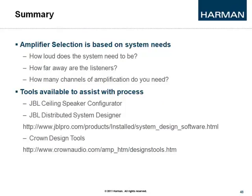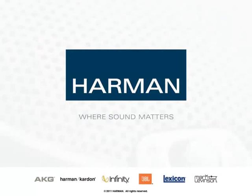To summarize what you need to design your system: determine how loud it needs to be, how far away the listeners are — measured at ear height, typically 4 feet, so a 10-foot ceiling means 6 feet to the listener — and how many zones and channels of amplification are required. Then use the available tools: the JBL Ceiling Speaker Configurator and Distributed System Designer, both free and downloadable. Crown design tools are also available online to calculate loss due to distance. High impedance systems are nothing to be scared of — it's just like designing any other system, with the added ability to put more speakers on the same amplifier.